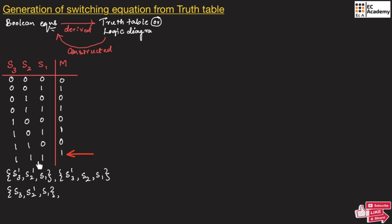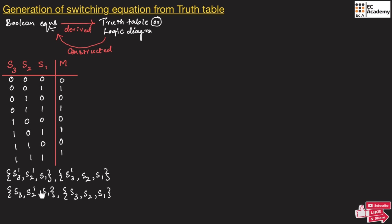For the fourth case, the output is 1 for S3, S2, and S1 — so we write S3, S2, S1. Here, a dash represents the complement of the variable, and if no dash is written we are taking the variable as it is. We have now identified these product terms for every output value equal to 1, which represent the conditions under which the output is 1.